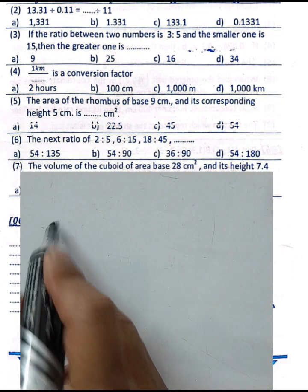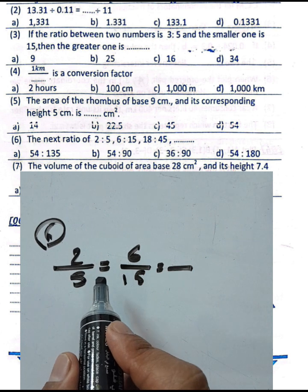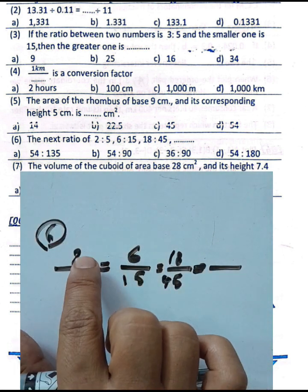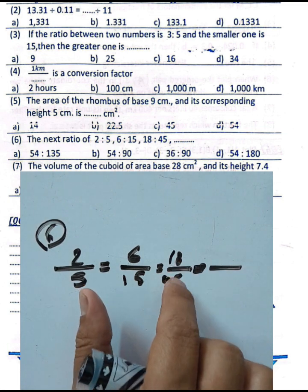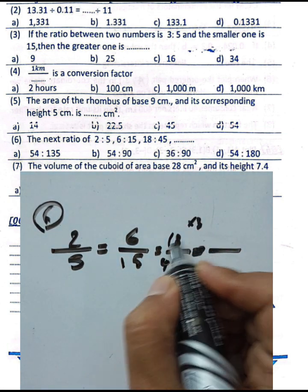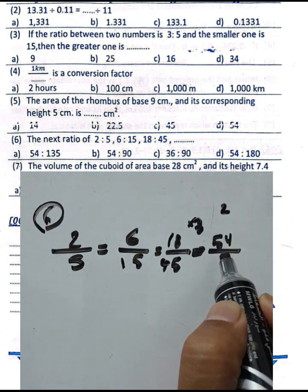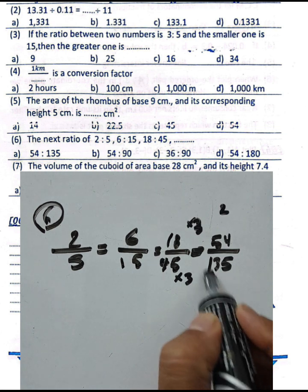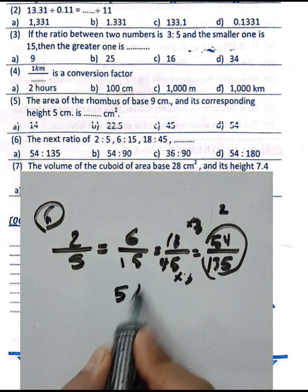Question six: find the next ratio in the pattern 2/5, 6/15, 18/45. Two times three equals six, three times six equals eighteen; two times five is ten — wait, five times three equals fifteen, fifteen times three equals forty-five. Continuing the pattern by multiplying numerator and denominator by three: 18 times 3 equals 54, and 45 times 3 equals 135. The answer is 54 over 135.